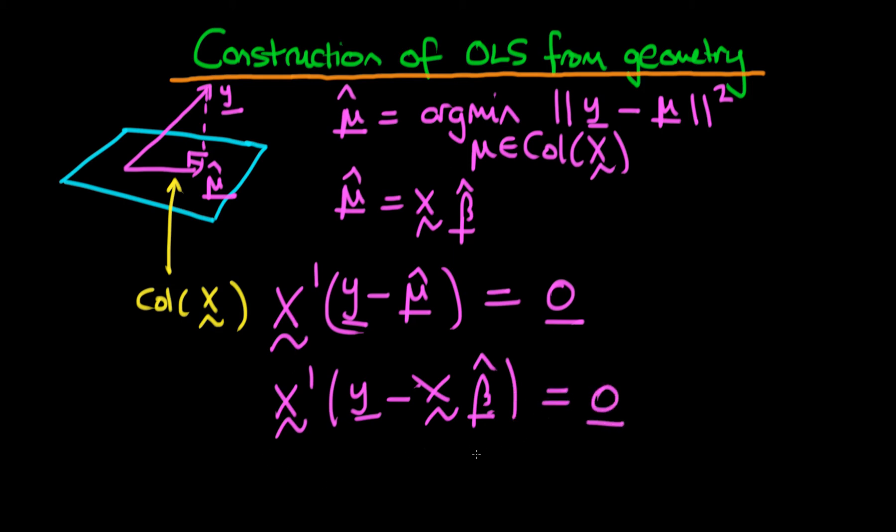Expanding this out, we get X prime y equals X prime X times beta hat. Pre-multiplying both sides by the inverse of X prime X, we get that beta hat equals (X prime X)^-1 times X prime y.